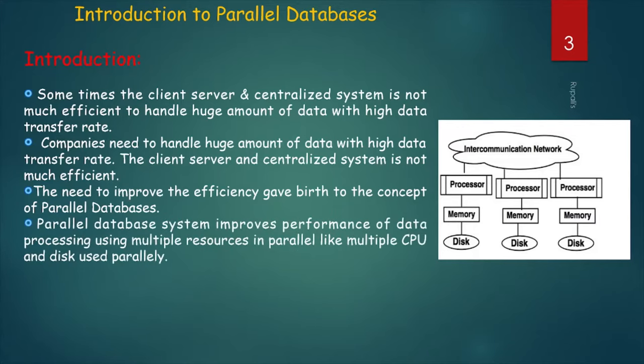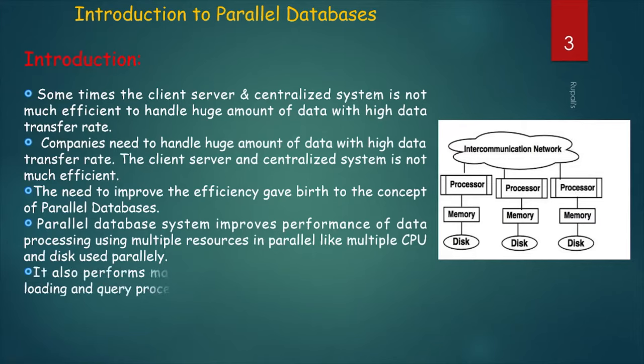A Parallel Database System improves performance of data processing using multiple resources in parallel, like multiple CPUs and disks used parallelly. Multiple CPUs and disks are connected through an intercommunication network. It also performs many parallelization operations like data loading, query processing, etc.